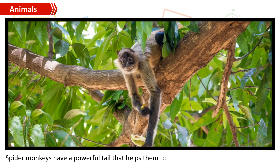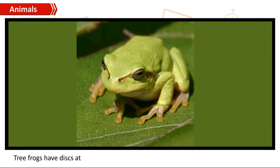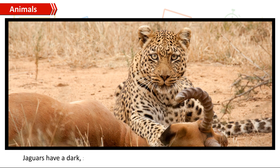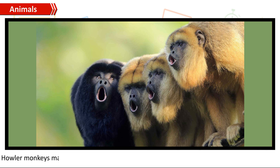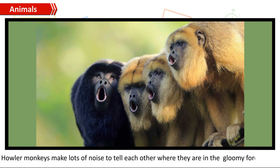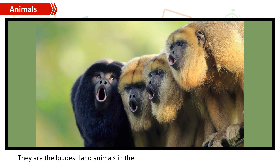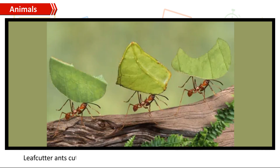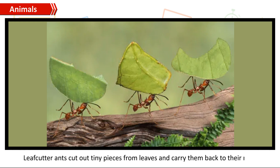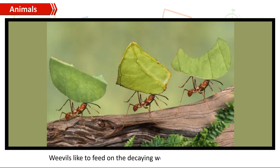Spider monkeys have a powerful tail that helps them swing quickly from branch to branch. Tree frogs have discs at the tips of their fingers and toes to help them grasp tree leaves. Jaguars have a dark spotted body so they can creep up and ambush prey without being seen. Chameleons can change the color of their skin to camouflage themselves and hide from predators. Howler monkeys make loud noise to communicate in the gloomy forest; they are the loudest land animals in the world and their growls can be heard for 20 miles. Tapirs are active at night and have a long snout to pull food into their mouth. Leafcutter ants cut tiny pieces from leaves and carry them back to their nest. Weevils like to feed on the decaying wood of fallen tree trunks.